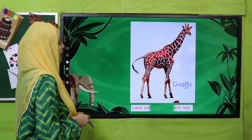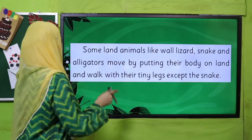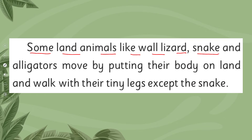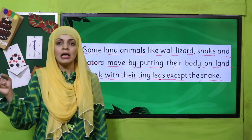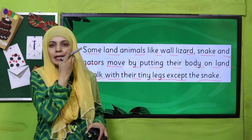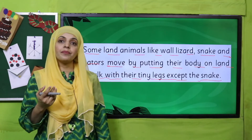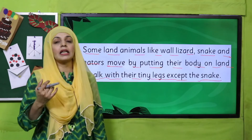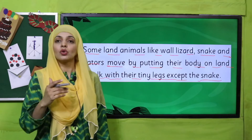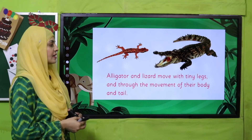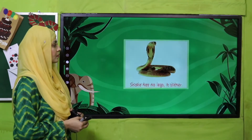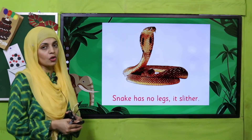Some land animals like wall lizards, snakes, and alligators move by putting their body on land and walk with their tiny legs, except the snake. Some animals crawl on walls or move with tiny legs like alligators and lizards. Alligators can go into water but they always make their home on land near water. Here you can see alligator and lizard — they have tiny legs. Snake has no legs and it slithers or crawls.